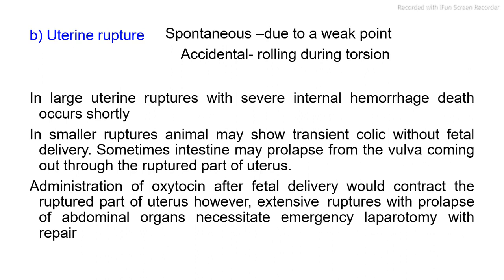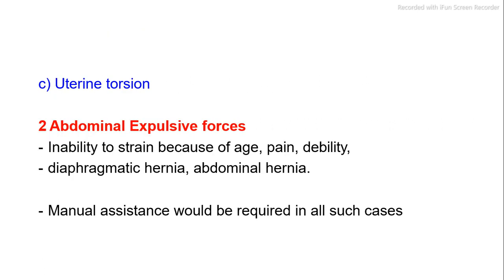Uterine rupture may be spontaneous due to a weak point, or accidental during rolling or torsion. In large uterine ruptures with severe internal hemorrhage, death occurs shortly. In smaller ruptures, the animal may show transient colic without fetal delivery. Sometimes intestine may prolapse from the vulva through the ruptured part of the uterus. Administration of oxytocin after fetal delivery would contract the ruptured part of the uterus.